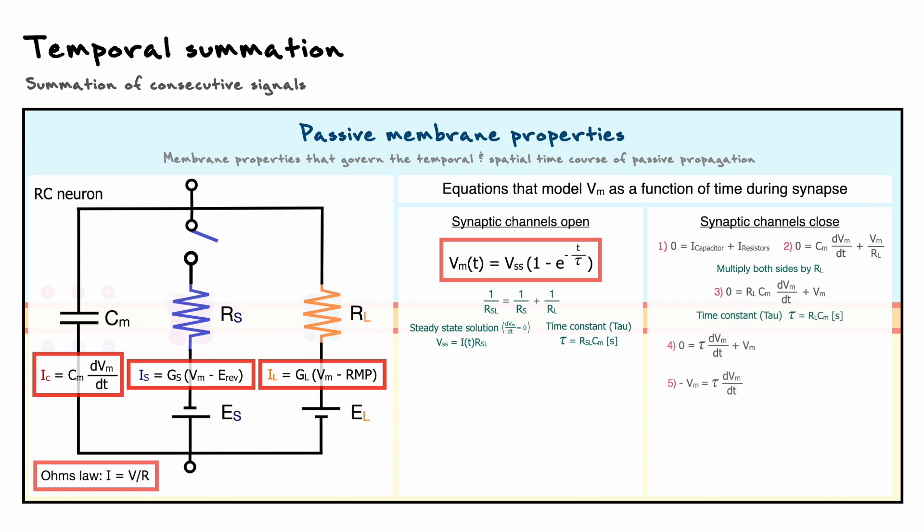You will notice that since the added current in the system is now equal to zero, there is no steady state potential to consider. Instead, since this decay picks up right after the end of the channels opening, we now have to consider the membrane potential at time zero, but I'll come back to that aspect very shortly.